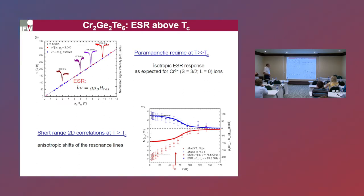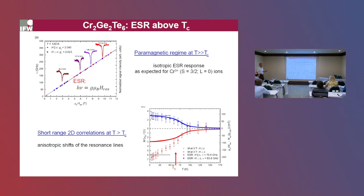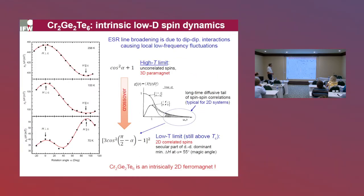Importantly, these shifts start to develop at temperatures twice as large as the ordering temperature. This is very unusual for a conventional three-dimensional magnet, where magnetic order sets in as soon as correlations develop in all three dimensions. This was the first indication that even in the bulk crystal, we observe short-range two-dimensional correlations at temperatures far above the ordering temperature. The next evidence that this material is truly intrinsically low-dimensional even in the bulk limit is the angular dependence of the ESR linewidth.